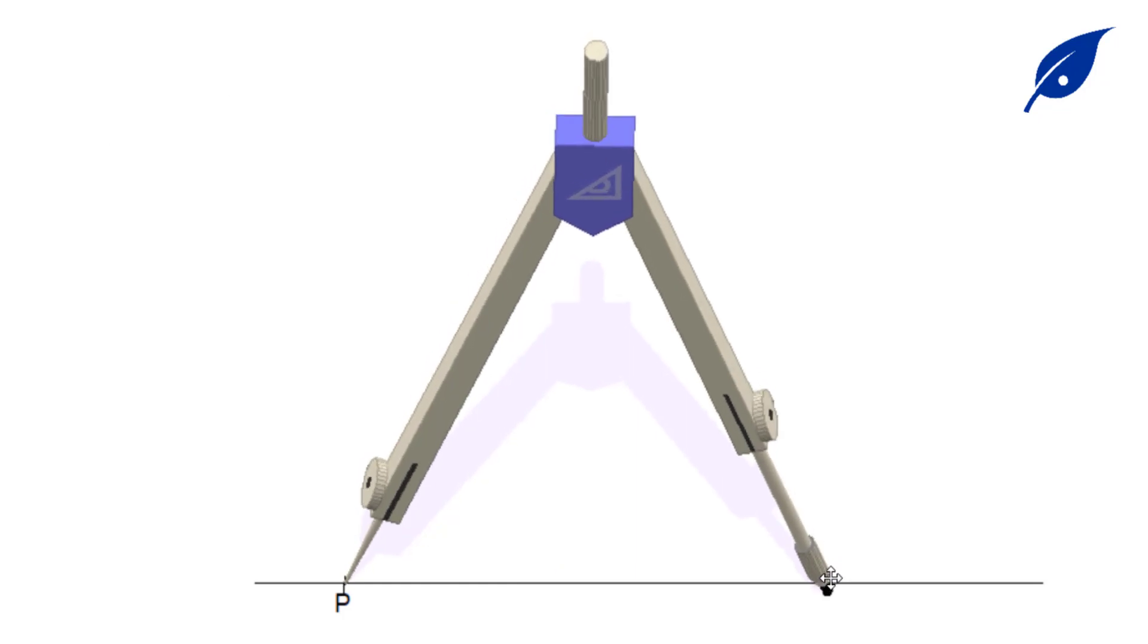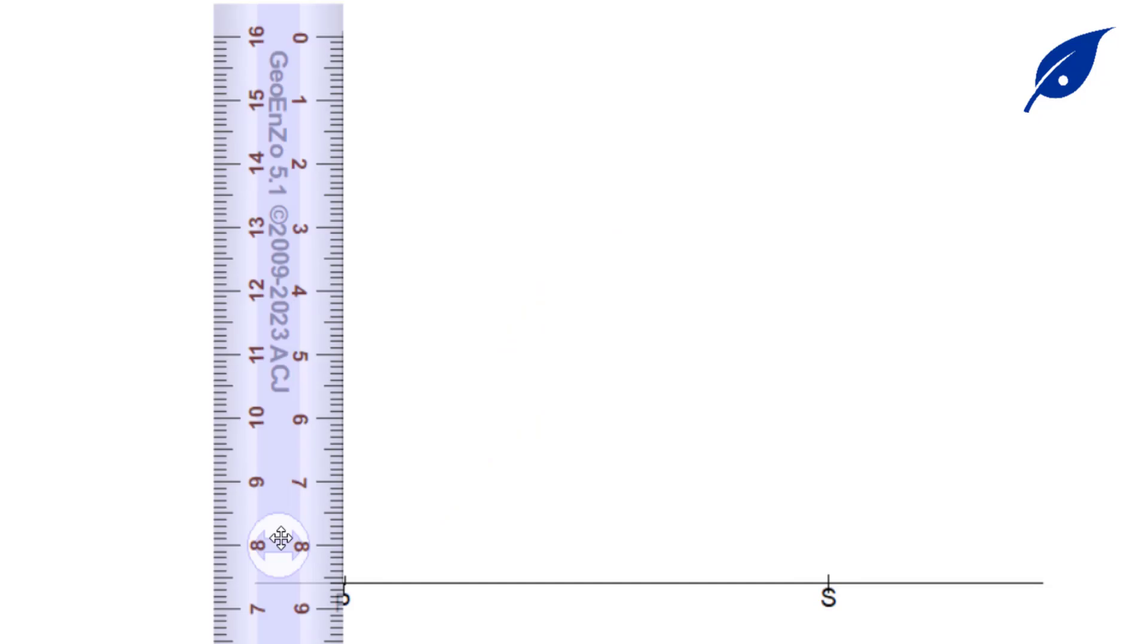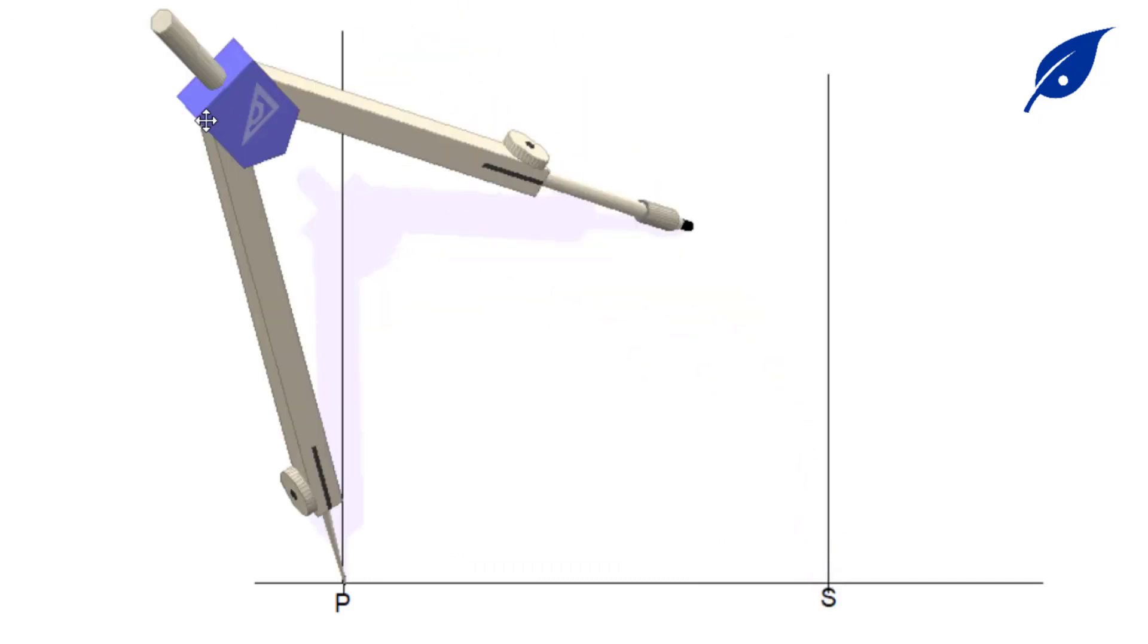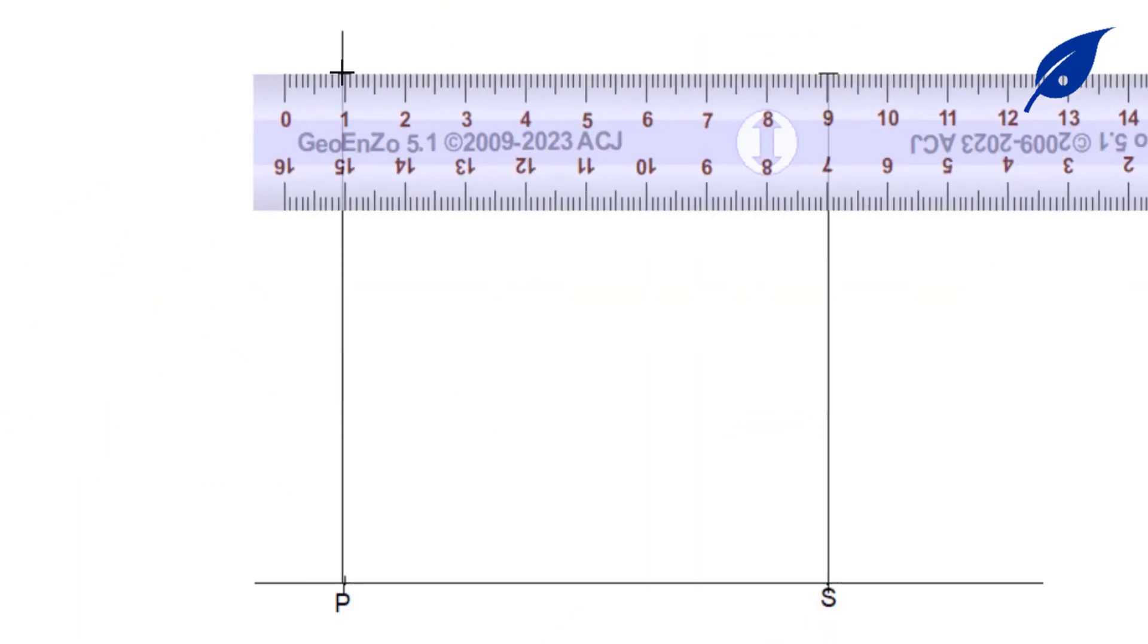After getting point S, we draw a perpendicular line to point P and point S. Then pick the measurement of the side to mark to give us the remaining sides of the square, which are Q and R.